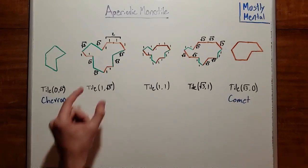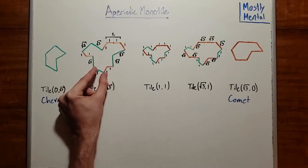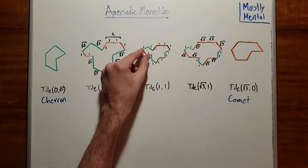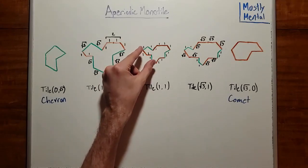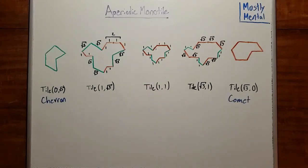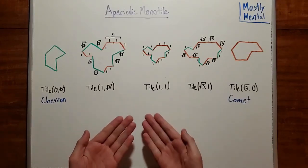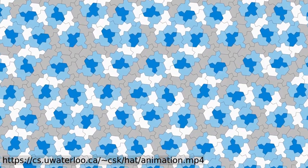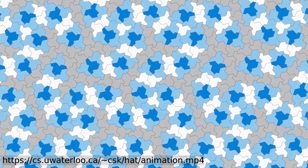So, for example, if we shrink these green sides down to the same length as the brown ones, we end up with this shape here. And then if we stretch the brown sides out to length root three, we get this shape instead. At the extreme ends, if we shrink the brown sides down to zero, we get this chevron shape. And if we shrink the green sides to zero, we get this comet. So the hat lies somewhere on a continuum between the chevron and the comet. I'll link an animated version of this below so you can see this transformation in action.